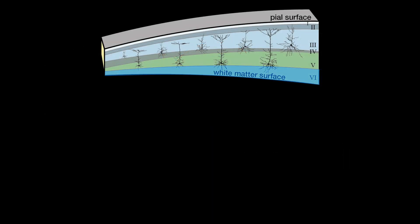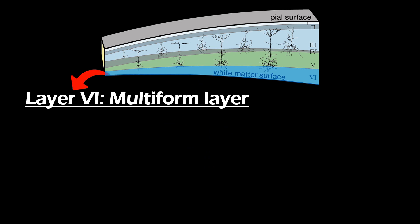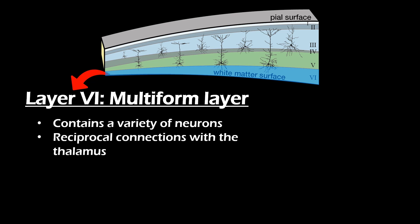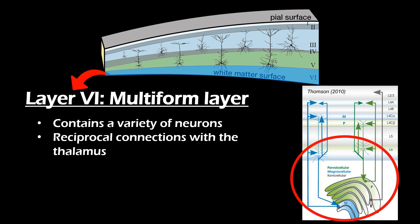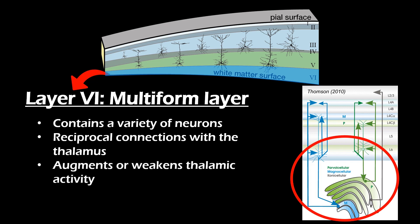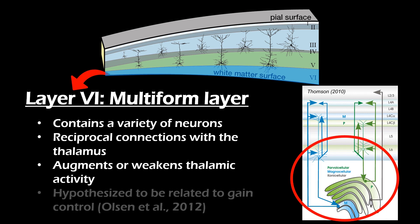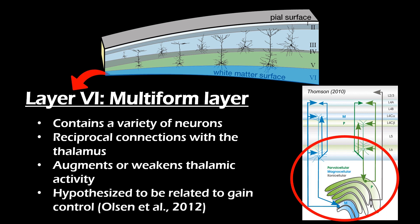Finally, there is the multiform layer, which is the deepest and thus the sixth layer of the cortex. As the name suggests, it is composed of a variety of neuronal types, including pyramidal, stellate, and other kinds of neurons. Layer 6 has many reciprocal connections to the thalamus — that is, layer 6 neurons from one cortical column connect with thalamus neurons that provide input to the same cortical column. These connections can be both inhibitory and excitatory. It has been proposed that this reciprocal loop is important for the modulation of thalamic signals, which is crucial for attenuating or strengthening signals. This is known as gain control, and it helps sensory information adapt to the current situation.